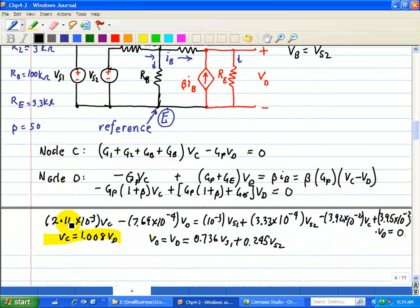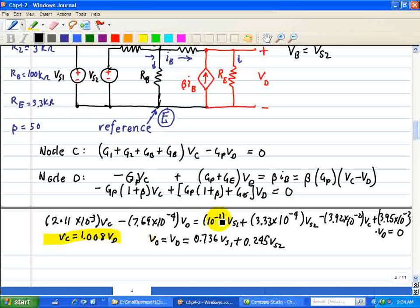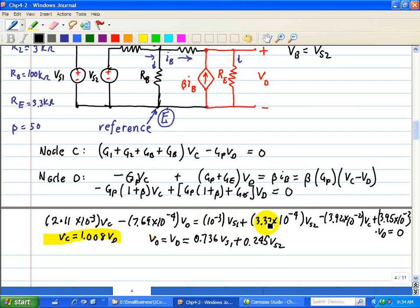We have 2.11 times 10 to the minus 3 VC minus 7.69 times 10 to the minus 4 VD equals 10 to the minus 3 VS1 plus 3.33 times 10 to the minus 4 VS2. Minus 3.92 times 10 to the minus 2 VC plus 3.95 times 10 to the minus 2 VD equals zero.